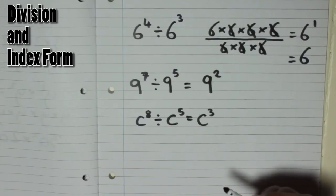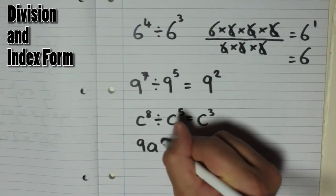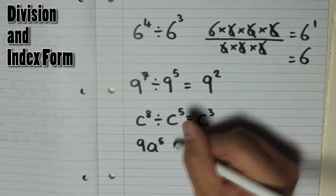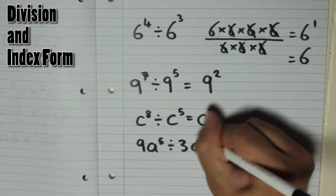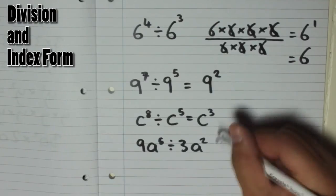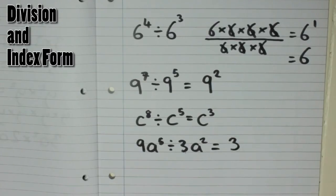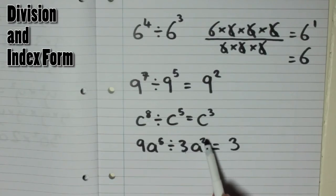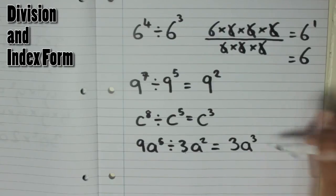If you had a number in front of a letter, for example, if we had 9a to the power of 5 and divide that by 3a to the power of 2, so 3a squared, what you would do here is do the 9 divided by 3 which is 3, and then just like you did before with the letters, a to the power of 5 divided by a to the power of 2. 5 take away 2 is also 3, so you're going to get a cubed, a to the power of 3.